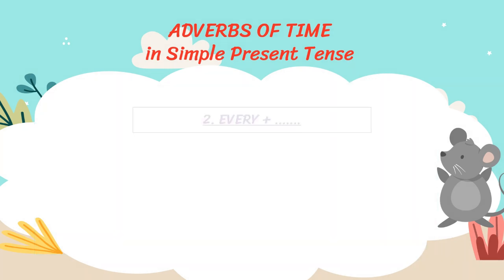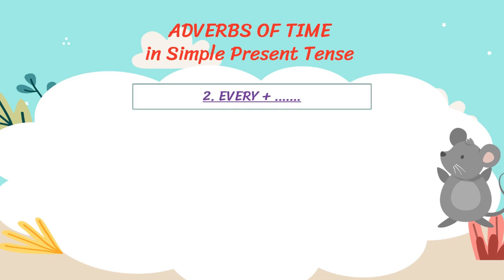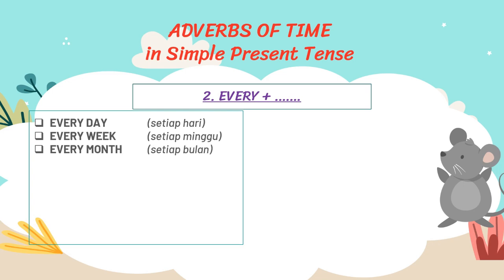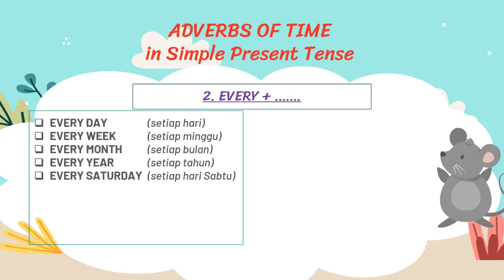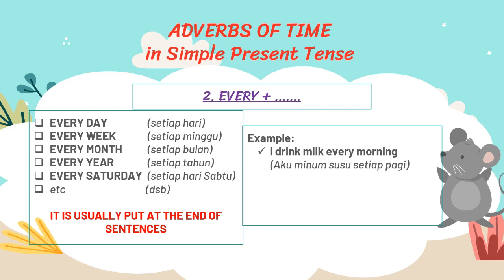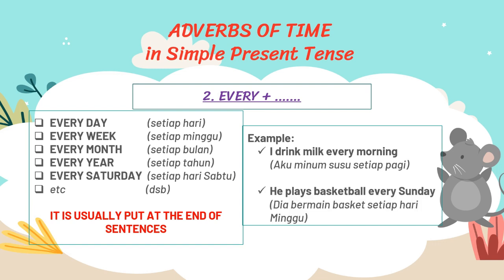The second adverb of time uses 'every' — setiap. It can be every day, every week, every month, every year, every Saturday, etc. It is usually put at the end of sentences. For example: I drank milk every morning. He plays basketball every Sunday.